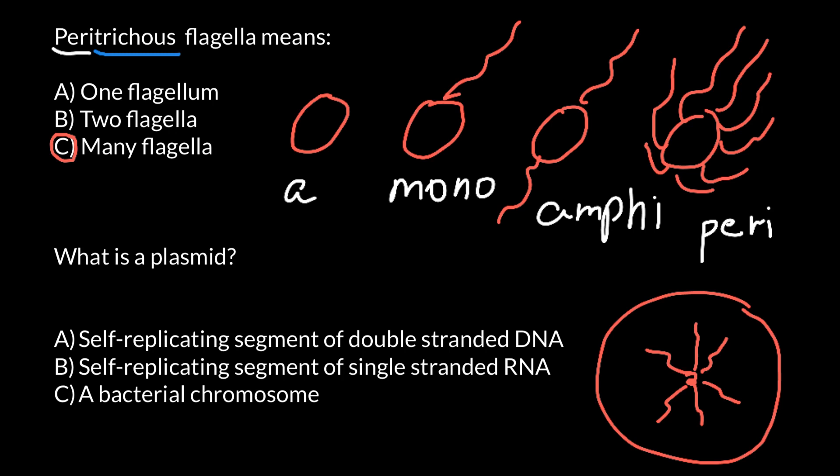The second question is: what is a plasmid? Basically there is nothing complicated to explain here — you just have to memorize that a plasmid is a self-replicating segment of double-stranded DNA. It can be present in bacteria or it can be absent. The answer is A. That is all for today, thank you for your attention.